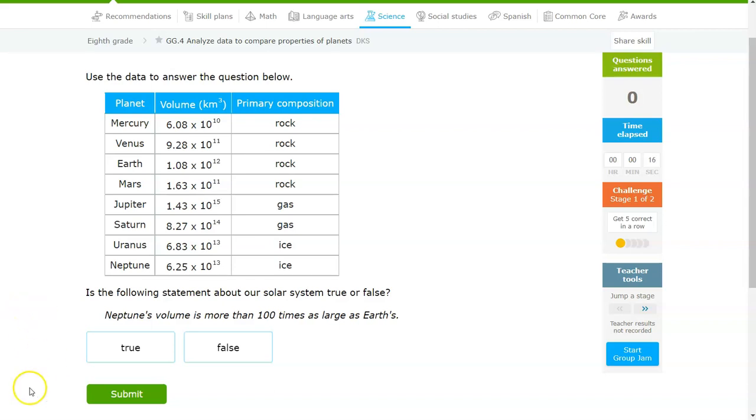So the first thing it's asking is whether Neptune is more than 100 times as large as Earth's. So Neptune is right here, 6.25 times 10 to the 13. Earth is right there, 1.08 times 10 to the 12.